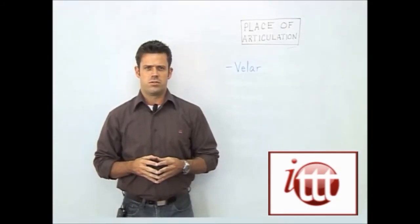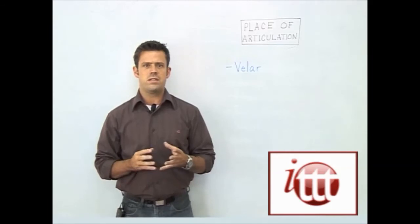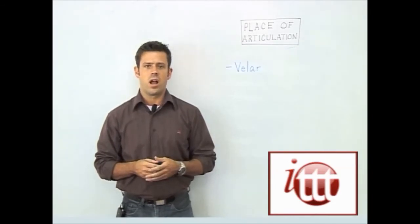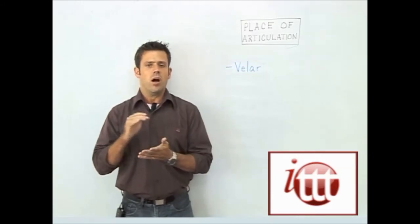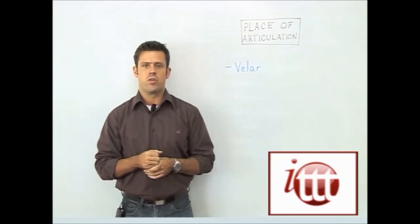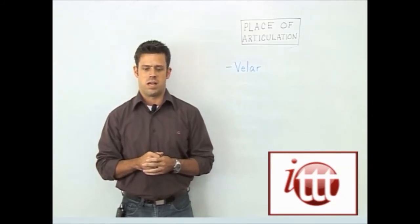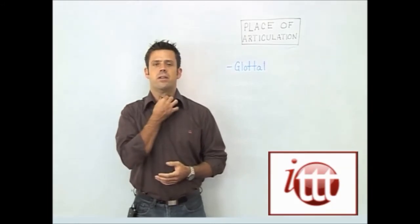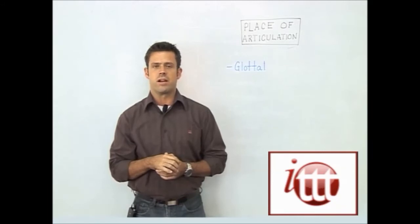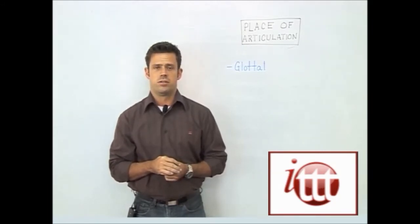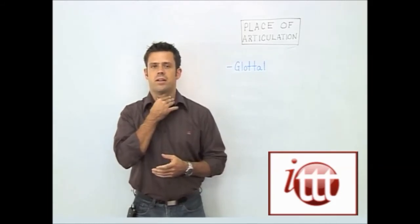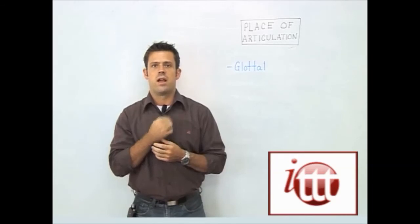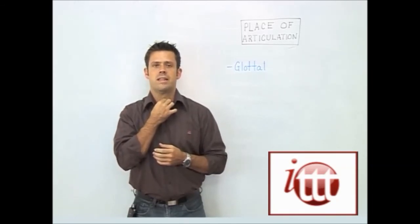Further back, we have our velar sounds — called so because they involve the tongue being raised against the soft palate. We have a few of those sounds: K, G, and also the NG sound. Finally, we have our glottal sound, made furthest back in the vocal tract in what's called the glottis — way back in the throat, not in the mouth. The only sound made there is the H sound. When you say it, your mouth is open, the air is flowing through, there's no vibration anywhere in the vocal tract, and the sound is being made way back there.